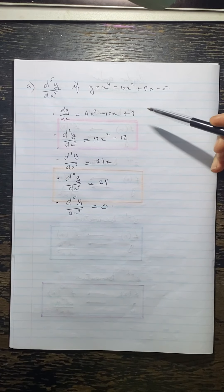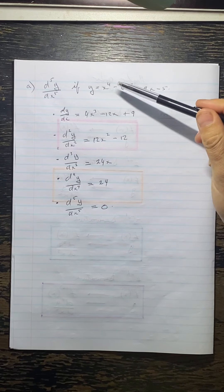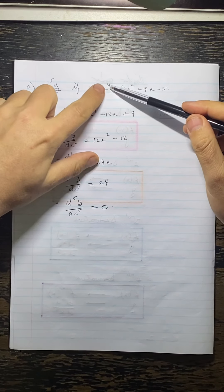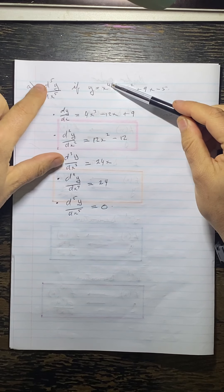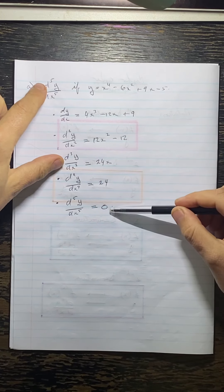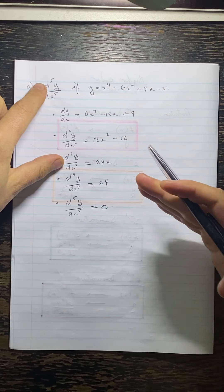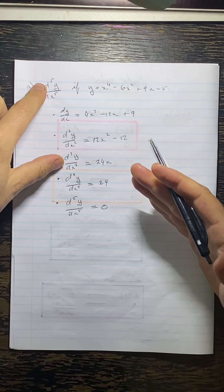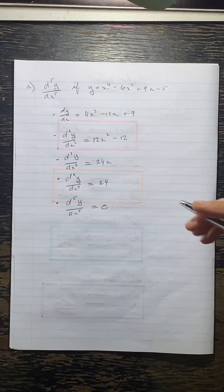Notice: if we have a polynomial of degree 4, then the derivative one step higher — the fifth derivative — gives us 0. So if we have a polynomial of degree 7 and we find the eighth derivative, we're expecting to get 0. It carries on like that.